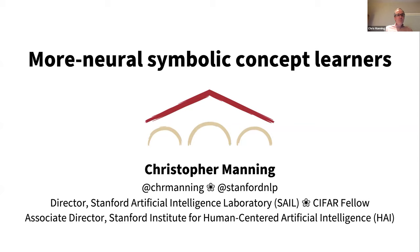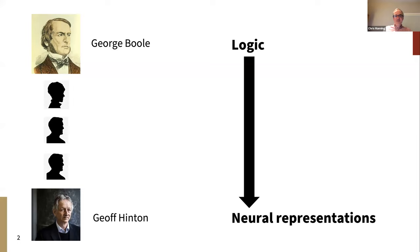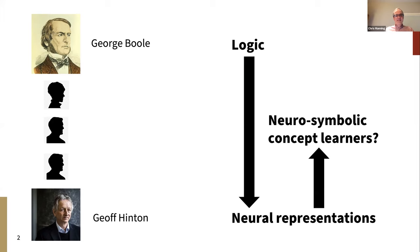Thanks very much to the organizers of the tutorial. Getting to speak first, maybe I can say something slightly controversial, arguing for a fairly neural position. Some of you may know that Jeff Hinton is the great-great-grandson of George Boole, which provides a good yardstick for measuring the descent from the logic of thought down to neural representations. The neuro-symbolic AI approach argues that we should climb some distance back up this yardstick.